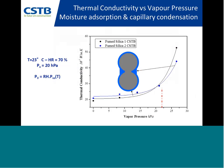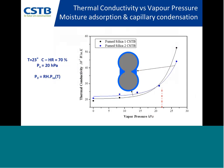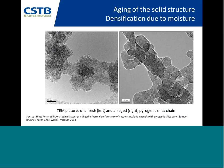Water absorption causes absorption and capillary condensation, increasing the thermal conductivity of the core material. The effect of water adsorbed at the surface is shown as a blue part around the gray particles. On the long term, water can modify the structure of a nanoporous material due to interaction between water and the nanoparticles. This depends on, for example, the hydrophobic treatment of the surface.